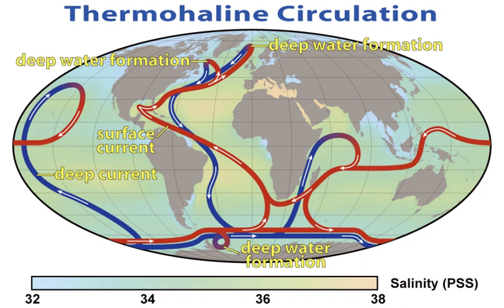Humans first acquired knowledge of the waves and currents of the seas and oceans in prehistoric times. Observations on tides were recorded by Aristotle and Strabo. Early exploration of the oceans was primarily for cartography and mainly limited to its surfaces and of the animals that fishermen brought up in nets, though depth soundings by lead line were taken.